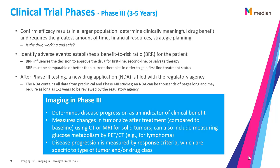Imaging in Phase 3 determines disease progression as an indicator of clinical benefit. It also measures changes in tumor size after treatment compared to baseline using CT or MRI for solid tumors, and can include measuring glucose metabolism by PET or CT — for example, for lymphoma. Imaging is also used to measure disease progression using response criteria which are specific to the type of tumor and/or drug class.